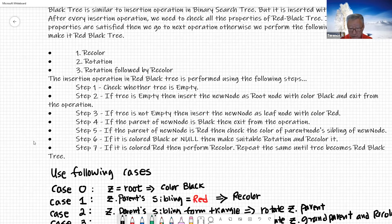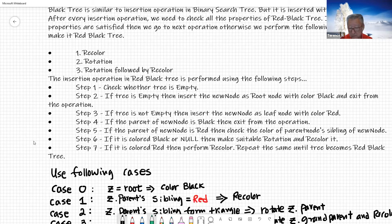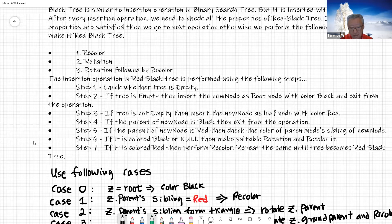The insertion operation in a red-black tree is performed using the following steps. First, check whether the tree is empty. If the tree is empty, insert the new node as a root node with the color black and exit. In other words, if it's empty and you want to add 20, then 20 becomes the root node, becomes black, and you're done.